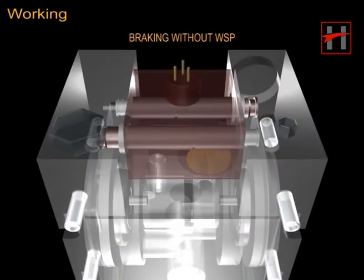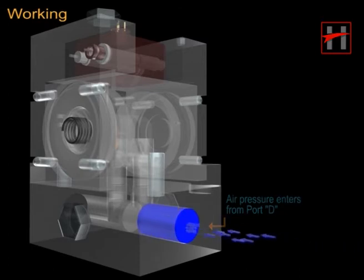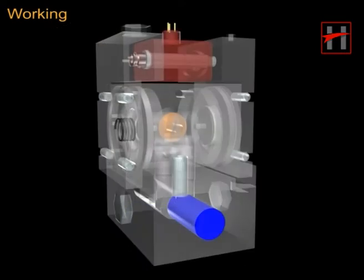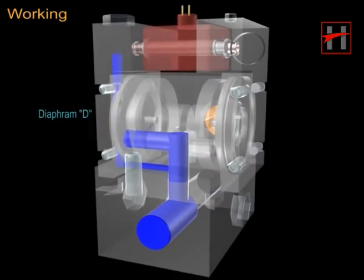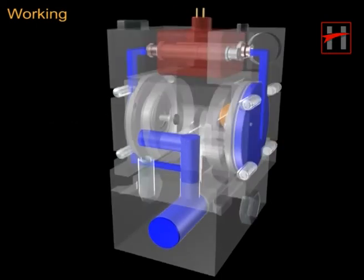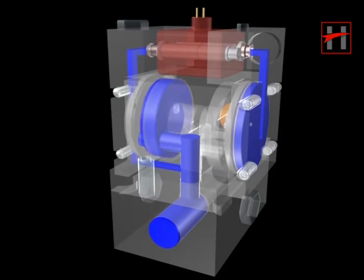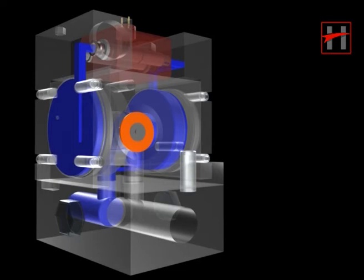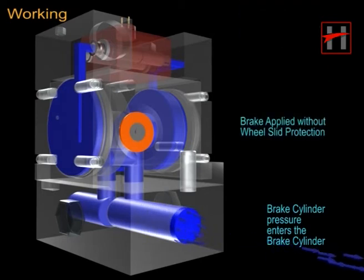Braking without WSP: The two valve magnets are in de-energized position. Because of this, the air pressure coming from the relay valve enters through port D. It pushes the diaphragm D, due to which the port from D to C opens, and pressure enters the brake cylinder. Thus brake is applied without wheel slide protection.